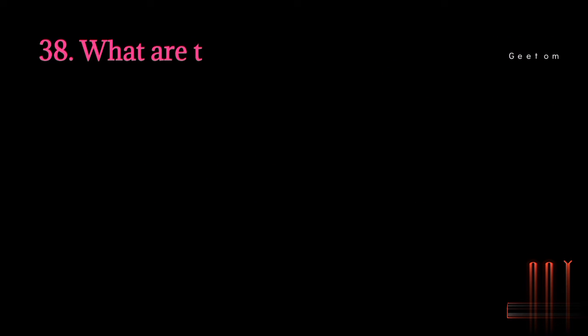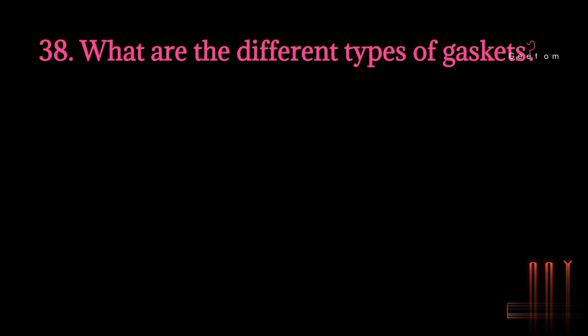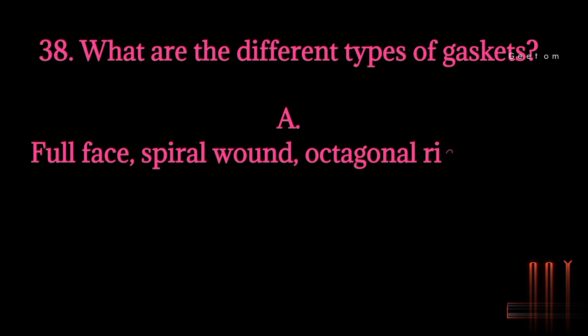Question 38: What are the different types of gaskets? Answer: Full face, spiral wound, octagonal ring, metal jacketed, and inside bolt circle.